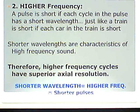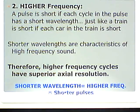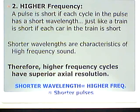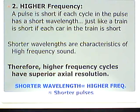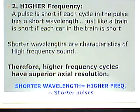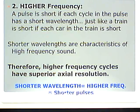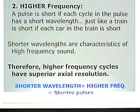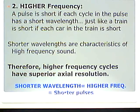Higher frequency: a pulse is short if each cycle has a short wavelength, just like a train is short if each car is short. If you have five cars that are one foot long versus two feet long, the train with one-foot cars is half the size. Short wavelengths are characteristics of high-frequency sound. Therefore, higher frequency cycles produce superior axial resolution: shorter wavelength equals higher frequency equals shorter pulses. This is straightforward — it's stuff you've already learned.